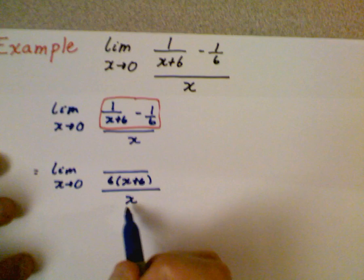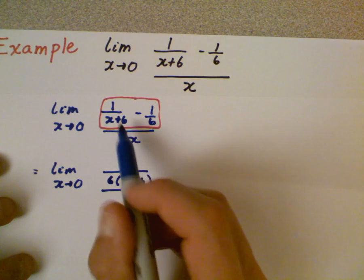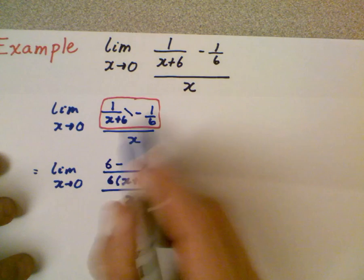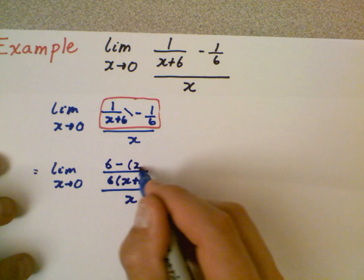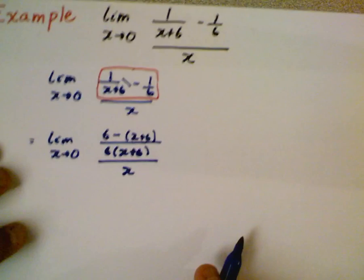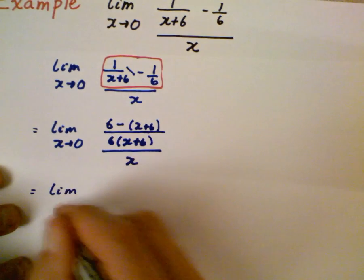Now 6 times this, so what we have to do is really just cross multiply. So you have 1 times 6 minus 1 times the quantity x plus 6. We've gone ahead and done that and now we're going to continue to simplify by multiplying that numerator out, distributing that negative.